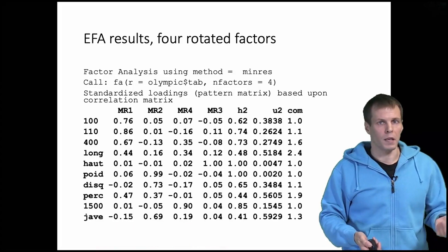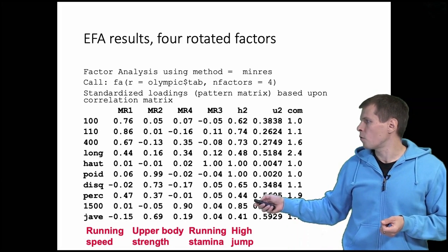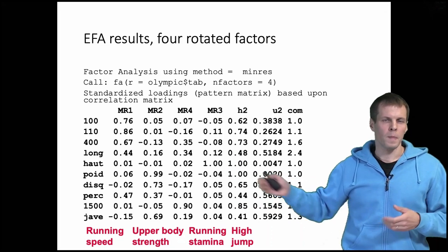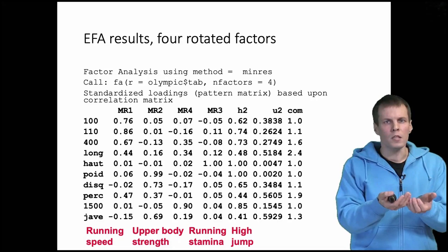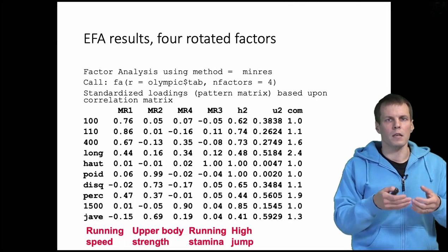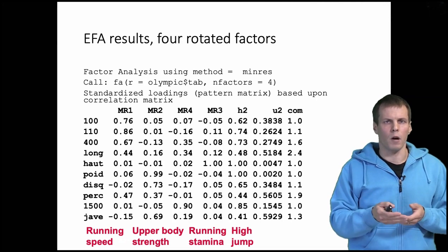We can also take more factors. If we take four factors, what is different here is that the fourth factor simply contains high jump and nothing else. High jump is quite a unique sport because it's not about running speed, it's not about stamina, it's simply about how high you can jump and it's not related to upper body strength.